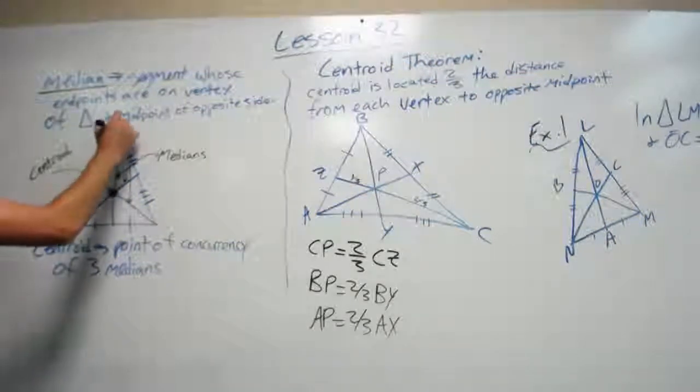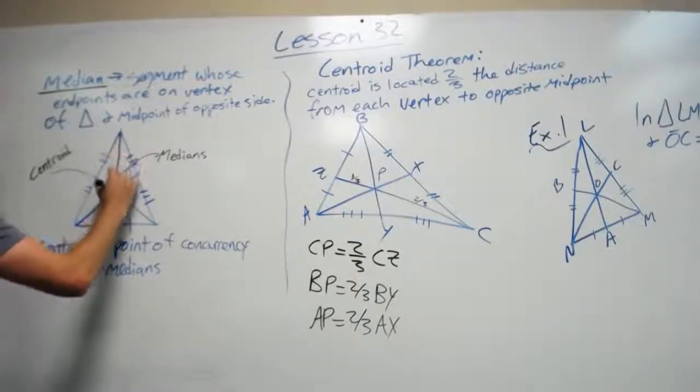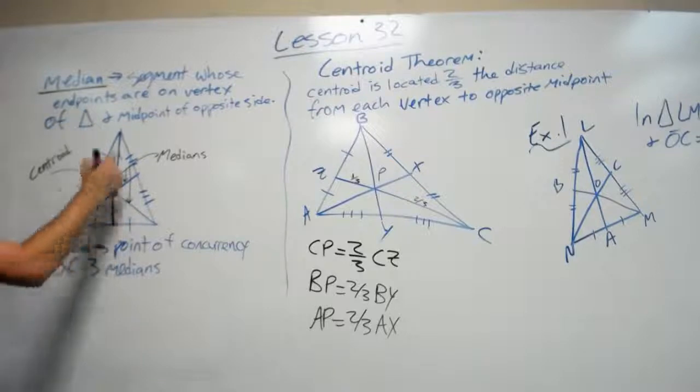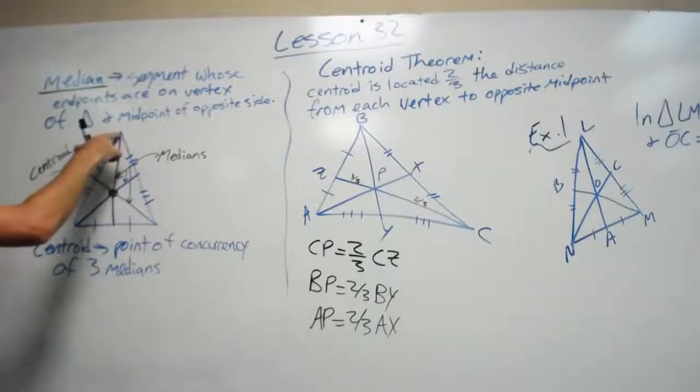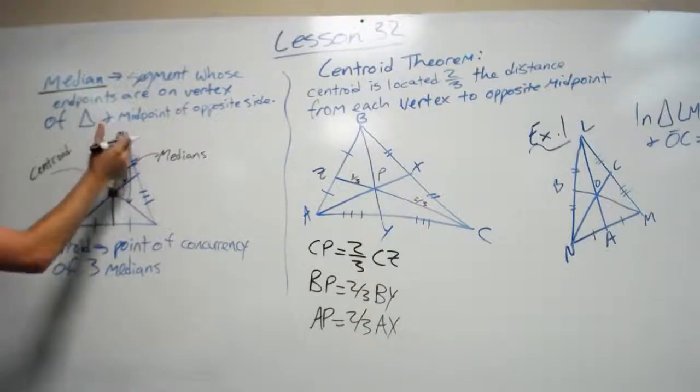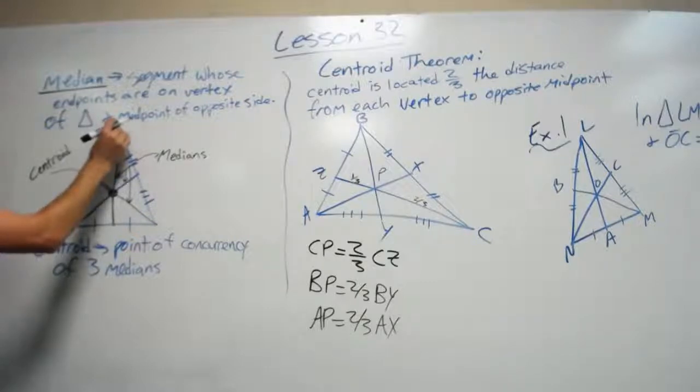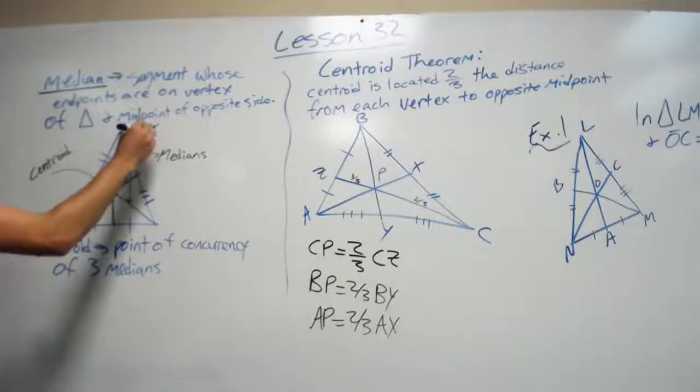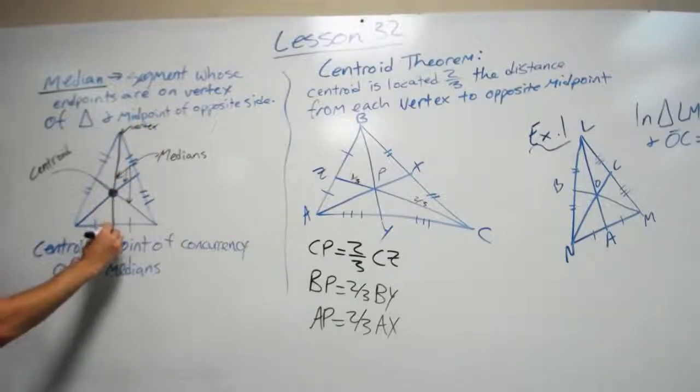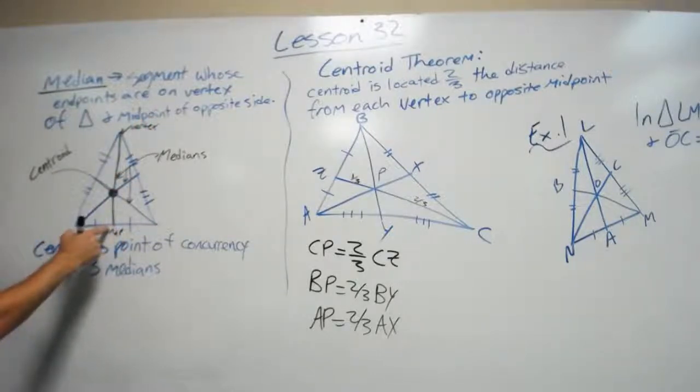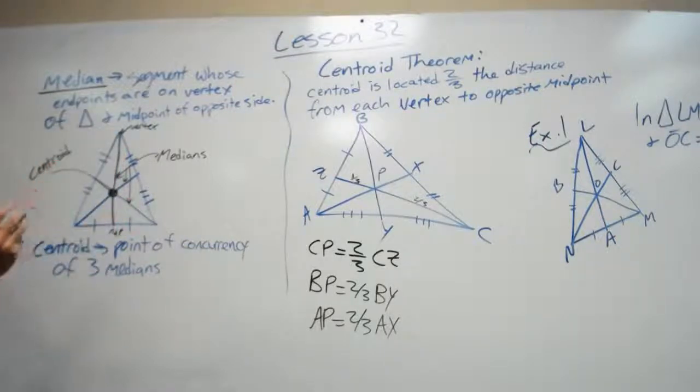So, this line would be an example of a median. It goes to a vertex. A vertex is where you have an angle, where two rays or line segments meet. So there's its vertex. And then it goes to a midpoint of the other side. That's one median, and each triangle can have three medians.